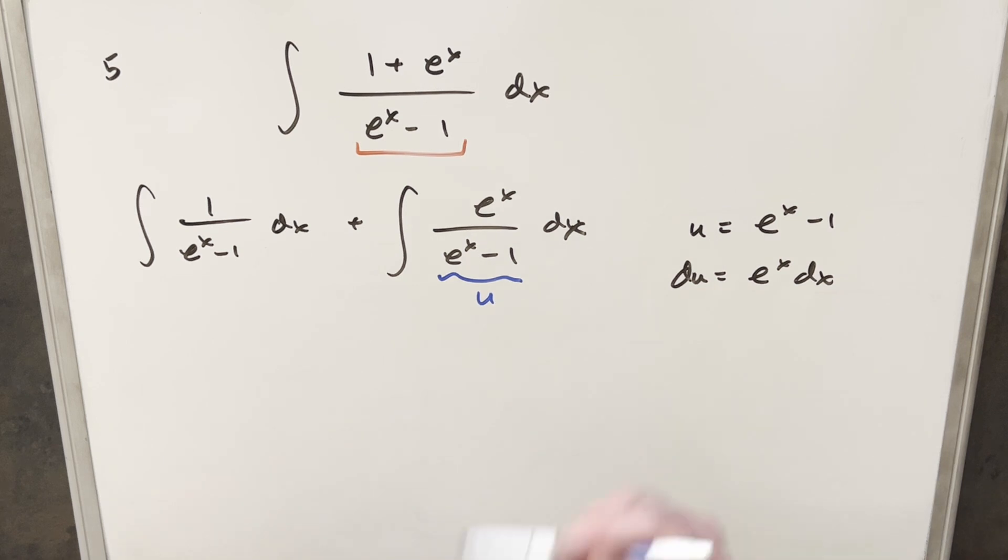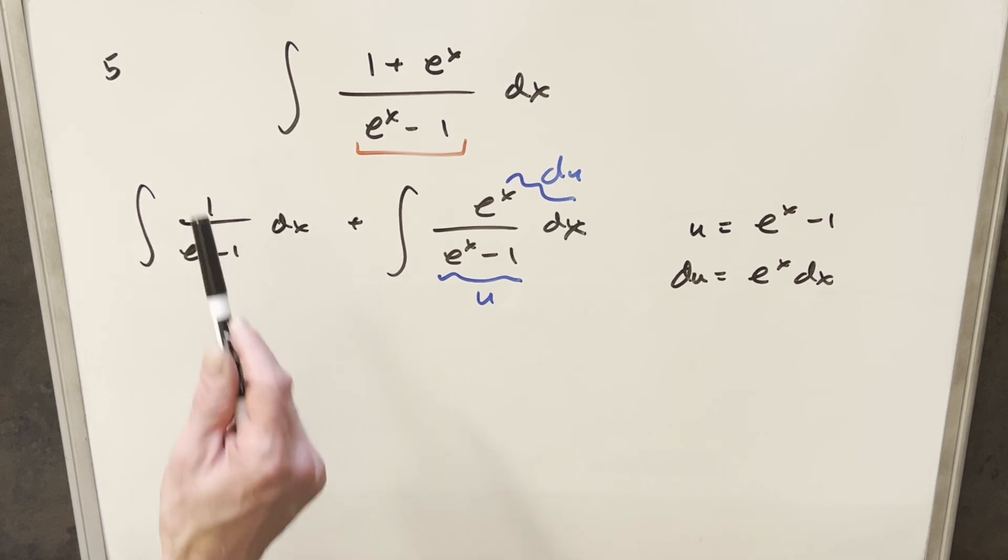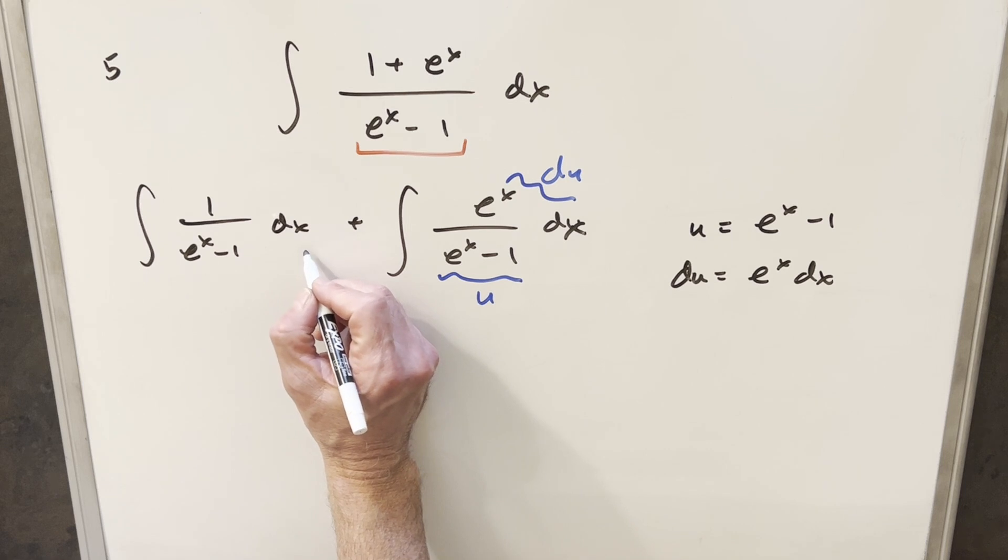So doing that, we're all set with our du right there. So this one's going to be easy. But in this other integral, we don't have anything in the numerator. So our u substitution, it's not quite as easy, but I'll just create that.